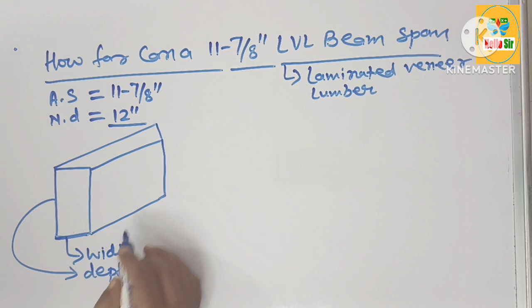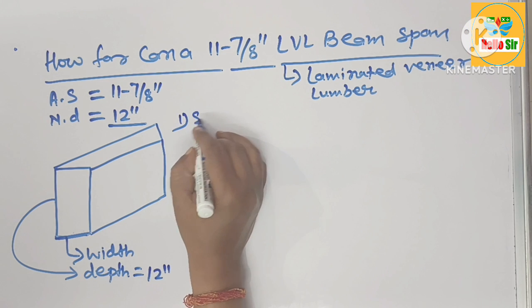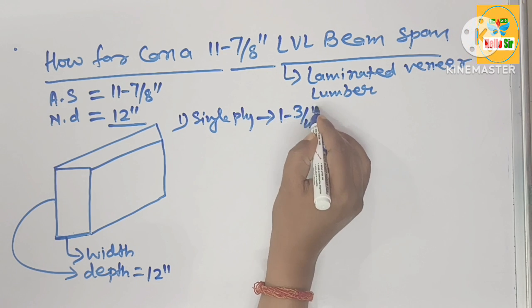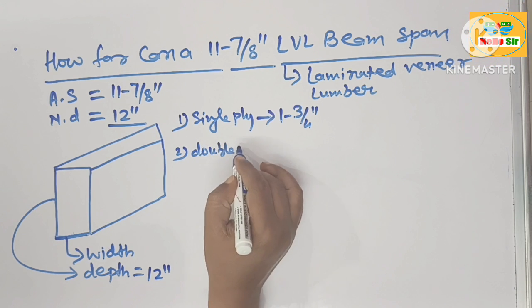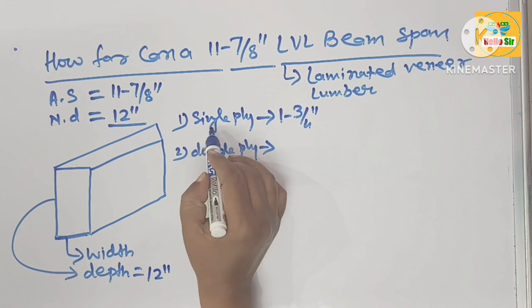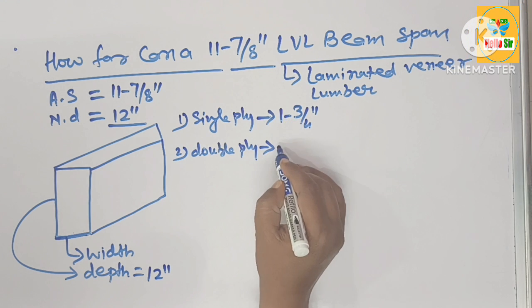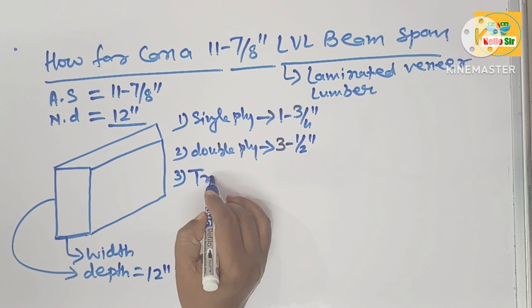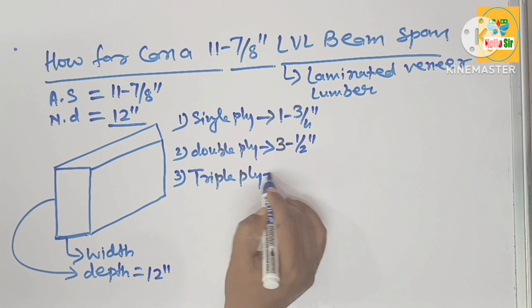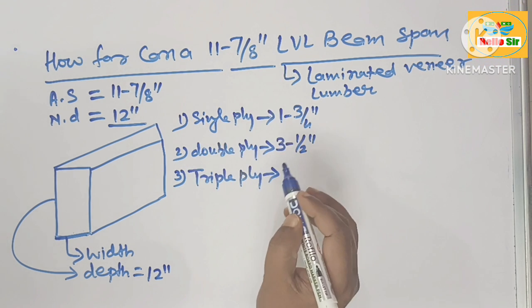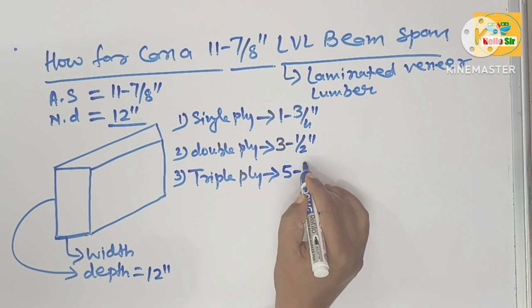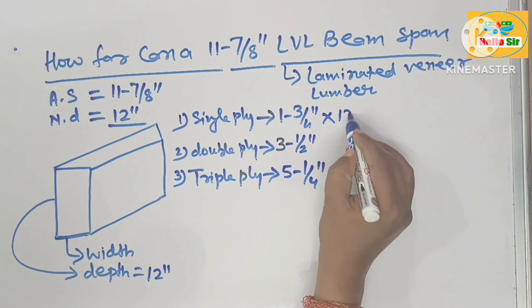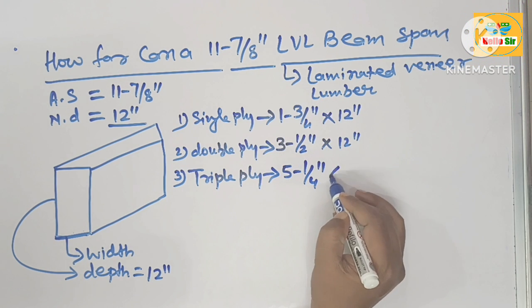Now the width can be single ply, where the thickness is about 1 and 3/4 inches. The double ply is made by sandwiching two single ply LVL beams, and that's why the thickness is 3 and 1/2 inches. There's also triple ply, made by sandwiching three single ply beams, with thickness of 5 and 1/4 inches. The nominal depth is 12 inches.